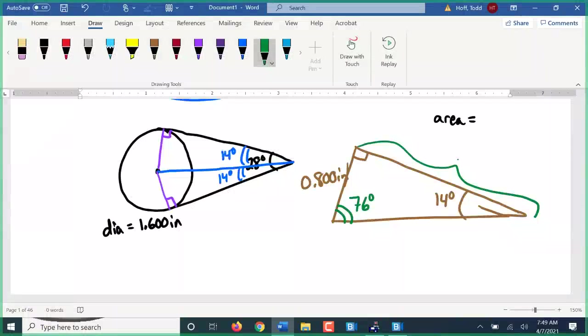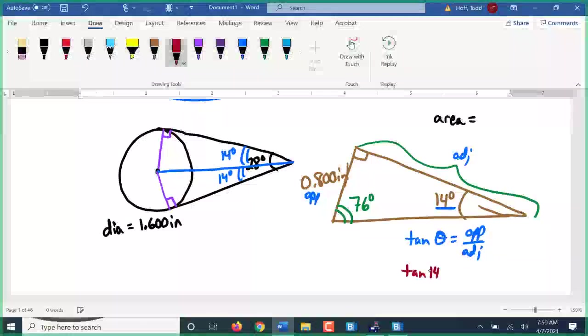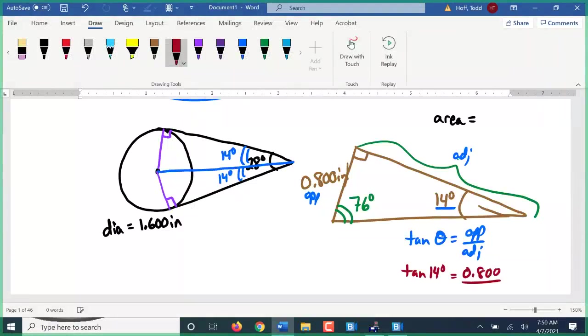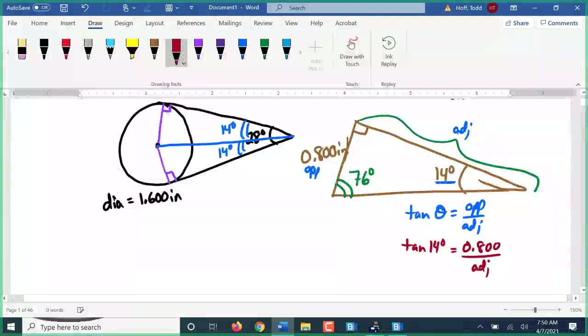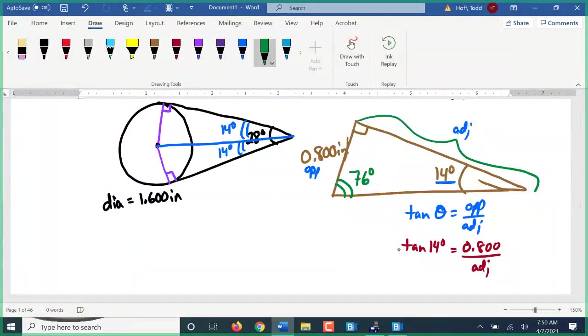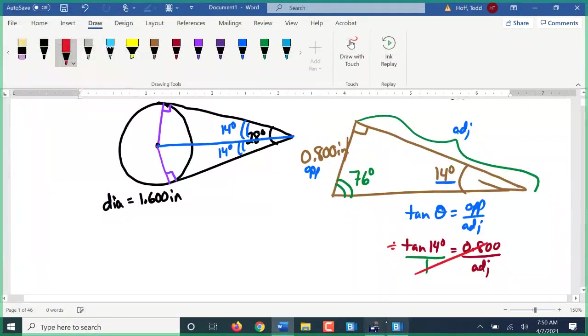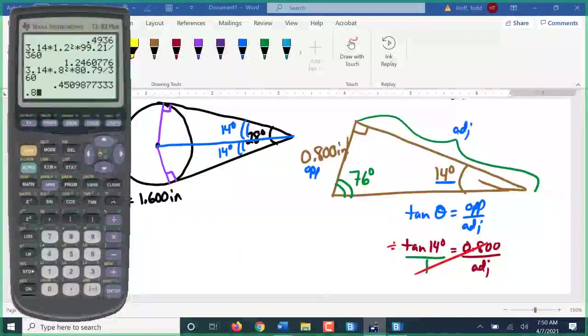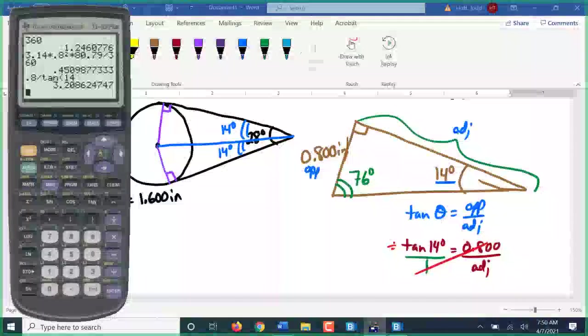How do I find that side? What trig function am I going to use? Tangent. Very good. From this angle, the 14 degree angle, the 0.8 is the opposite. This side is the adjacent. Tangent. Tangent of theta equals the opposite side over the length of the adjacent. So, I know that the angle is 14 degrees. Opposite side is 0.8. My adjacent side is what I'm trying to find. How do I solve that? Take it in proportion and cross multiply and divide. So, 1 times 0.8 is 0.8, divided by the tangent of 14. 3.209.